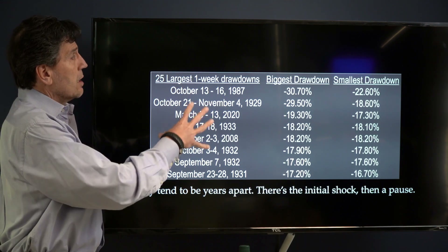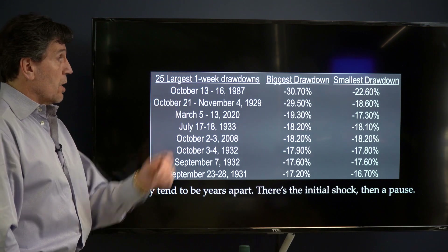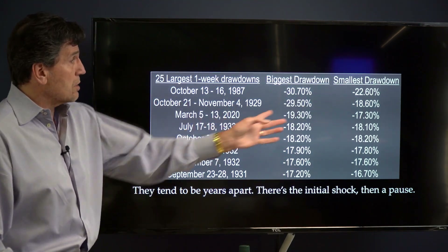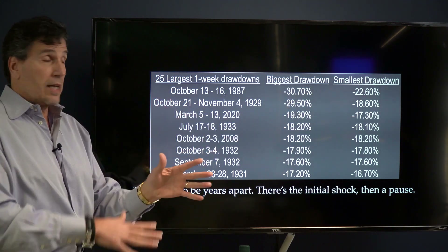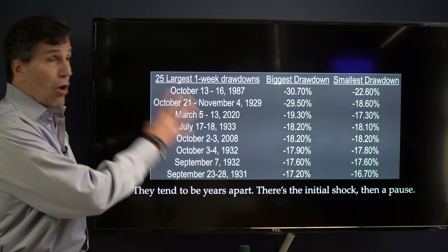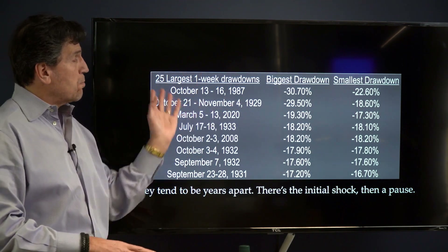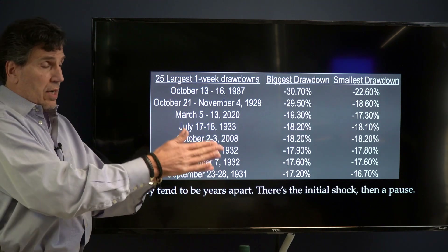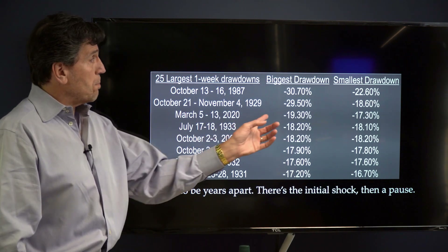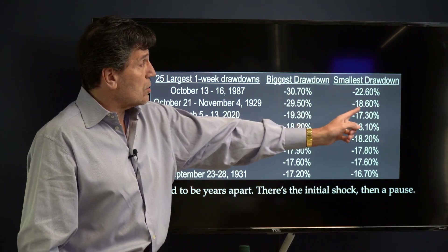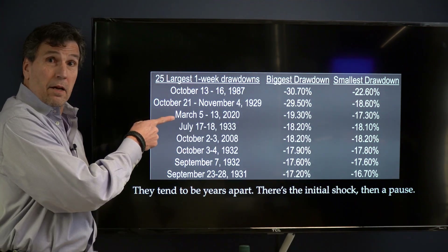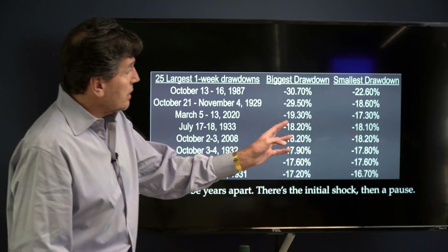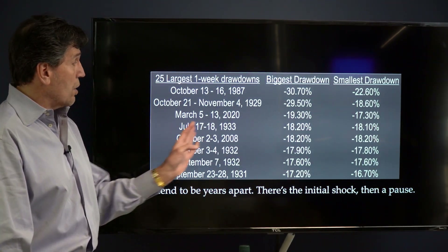They are clustered together. The 25 largest one-week drawdowns in history occurred around the week of October 13th–16th, 1987 — that was a gigantic move down of almost 31%. Then you have to go to 1929 for the next cluster, with the worst being 29.5% and the smallest drawdown 18.6%. And right now we're seeing a huge down draft of 19.3%.